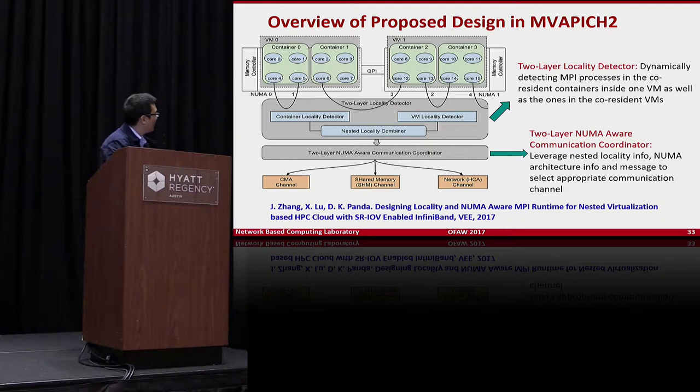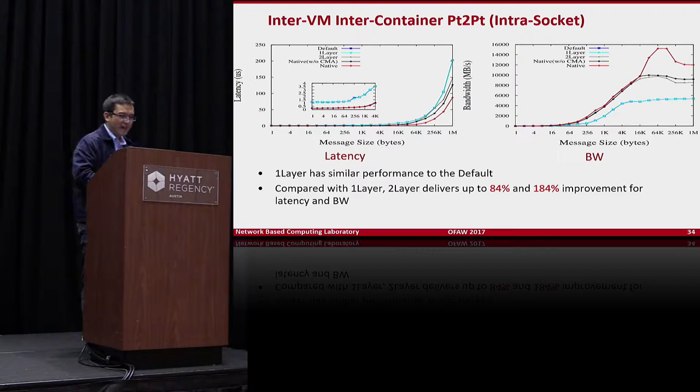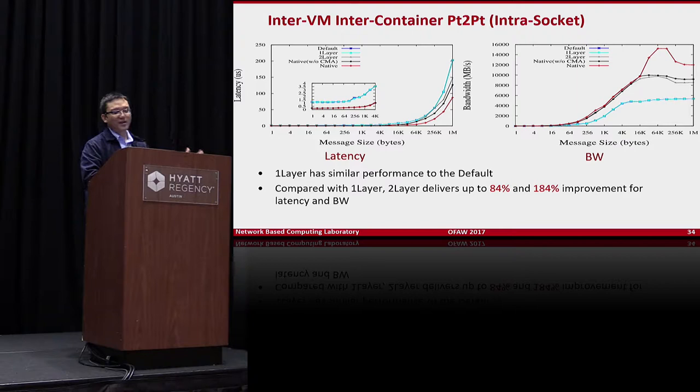We will present this work at VEE in the next two weeks. We propose two-layer locality detection: one layer for virtual machines, one layer for containers. We also propose new middleware designs because VMs and containers may span different sockets — we propagate NUMA information across layers to optimize performance. Results show up to 184% improvement in latency and bandwidth compared with the earlier one-layer design.